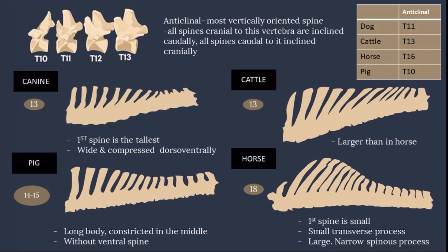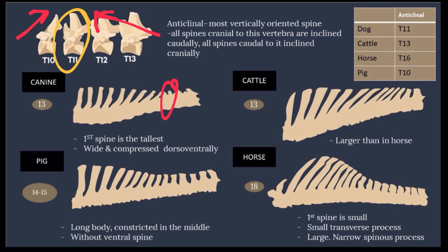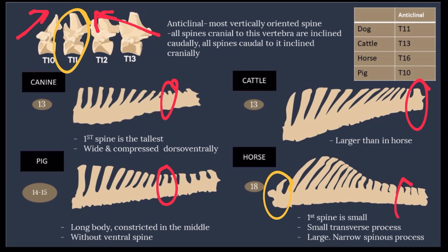Comparing the thoracic vertebrae of animals: In the canine, the first spine is the tallest. The thoracic vertebrae are wide and compressed dorso-ventrally. The anticlinal in the dog is T11. In the pig, the thoracic vertebrae have a long body constricted in the middle; the anticlinal is T10, and there are 14 to 15 thoracic vertebrae total. In the cattle, the thoracic vertebrae are larger than in horse; the anticlinal is T13, and there are 13 thoracic vertebrae. In the horse, the first spine is small with a small transverse process; the anticlinal is T16, and there are 18 thoracic vertebrae.